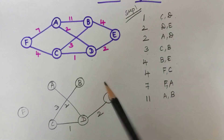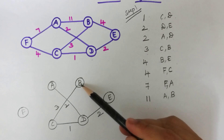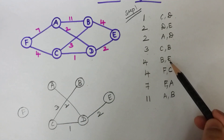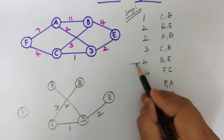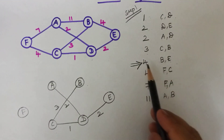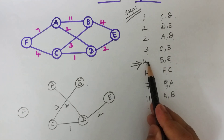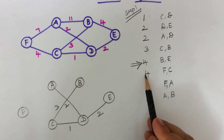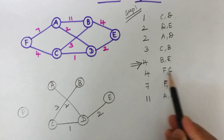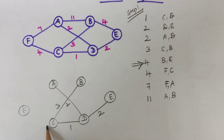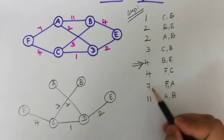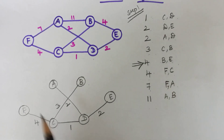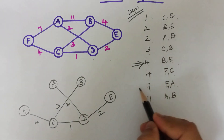The next weight is four between B and E. If I connect B and E now, it will form a cycle, so I cannot connect B and E — I am going to skip this step. Moving to the next step, we again have weight four, this time between F and C. If I connect F and C, there is no cycle formed, so I can directly connect F and C with weight four. The next weight is seven between F and A, but connecting F and A would again form a cycle, so I skip this step as well.